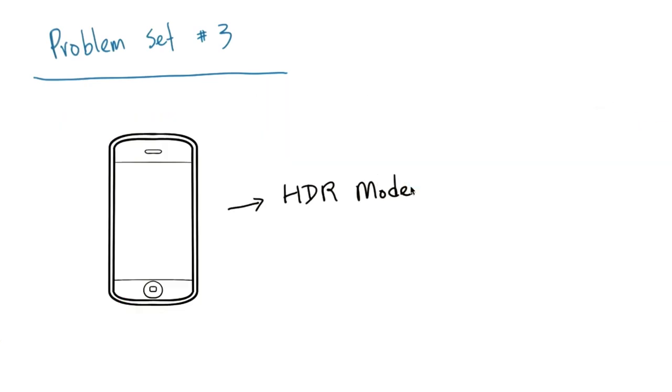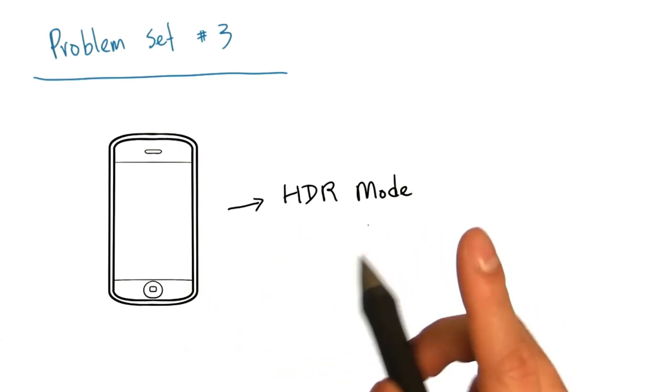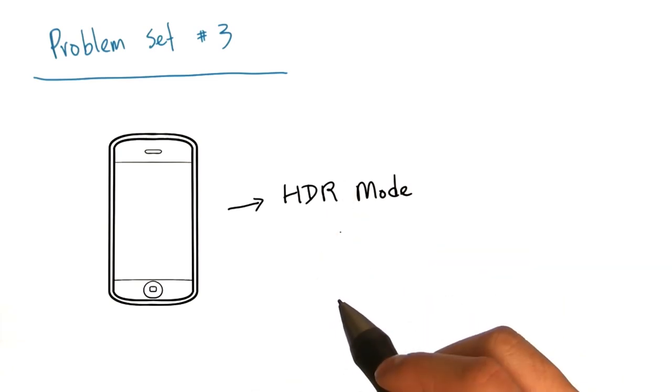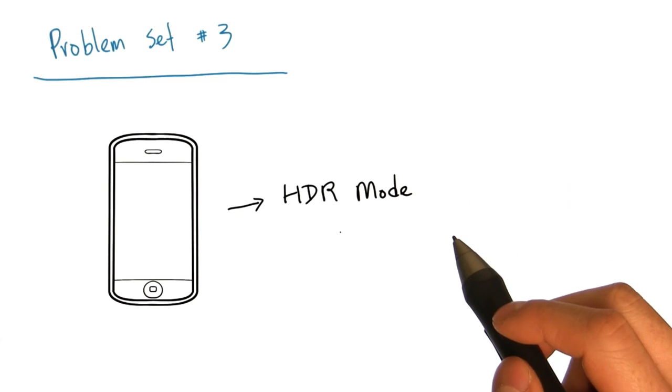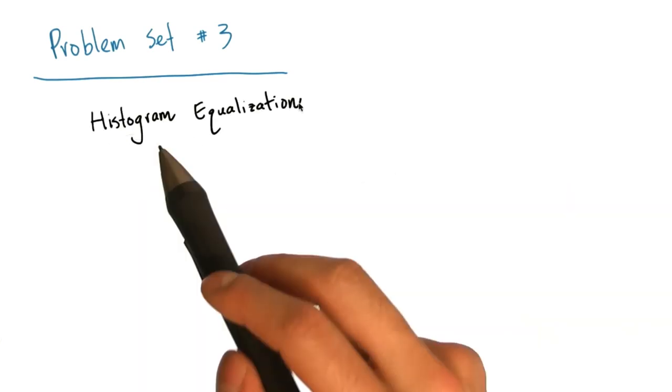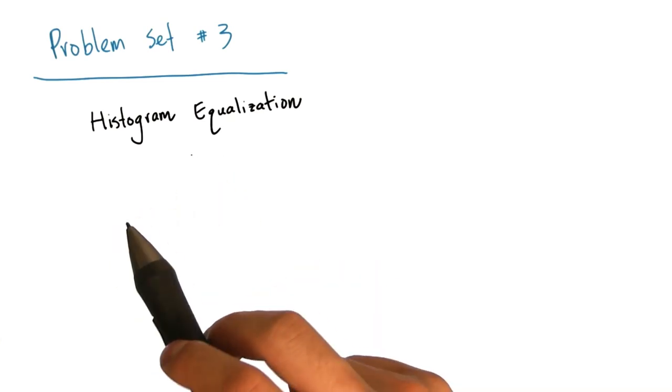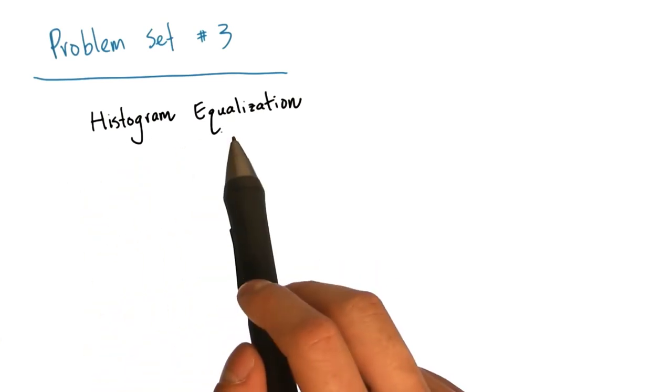There's a good chance that the camera on your cell phone has a high dynamic range or HDR mode. When you take pictures in HDR mode, your camera is performing a tone mapping step to arrive at the final image that it shows you. In this problem set, you will be implementing a simple algorithm for tone mapping called histogram equalization.